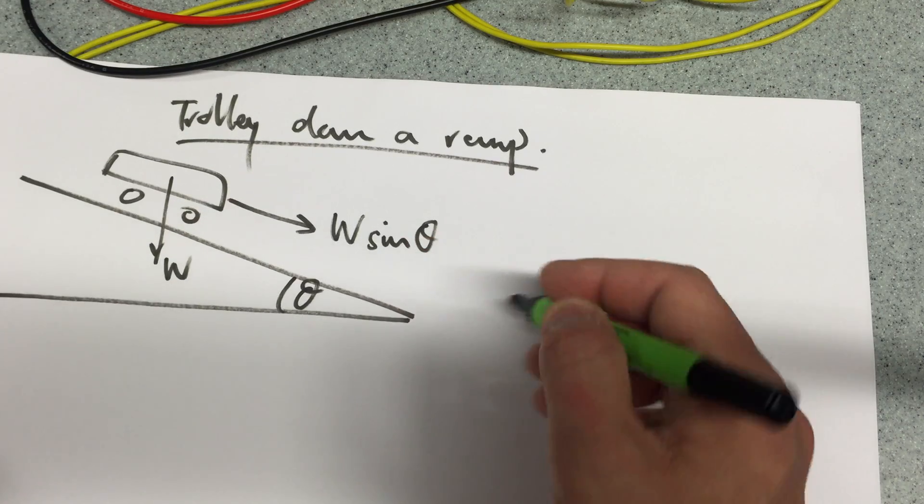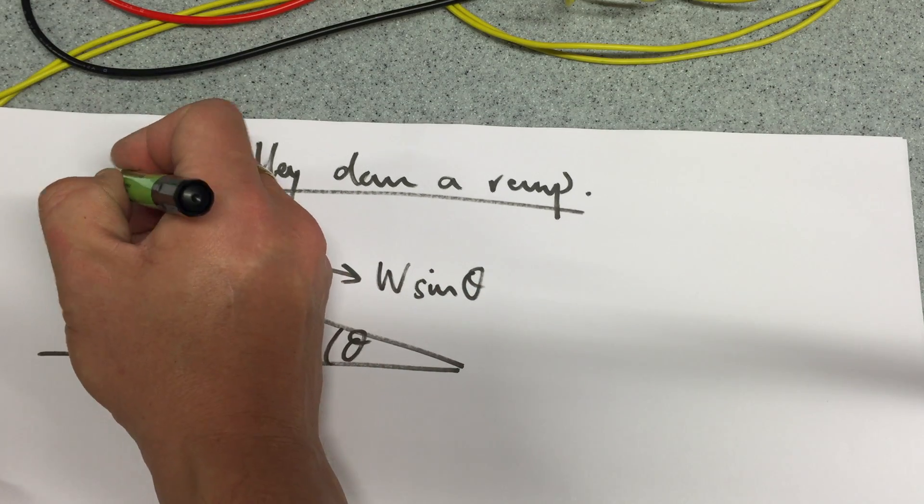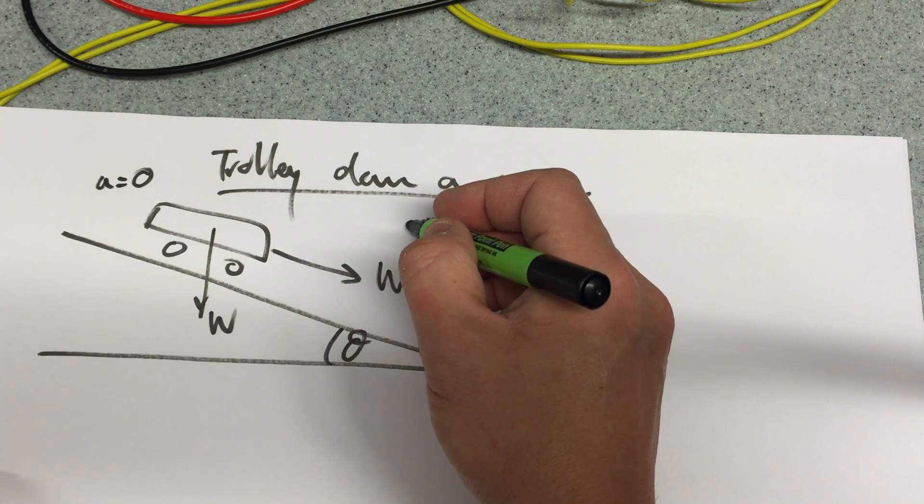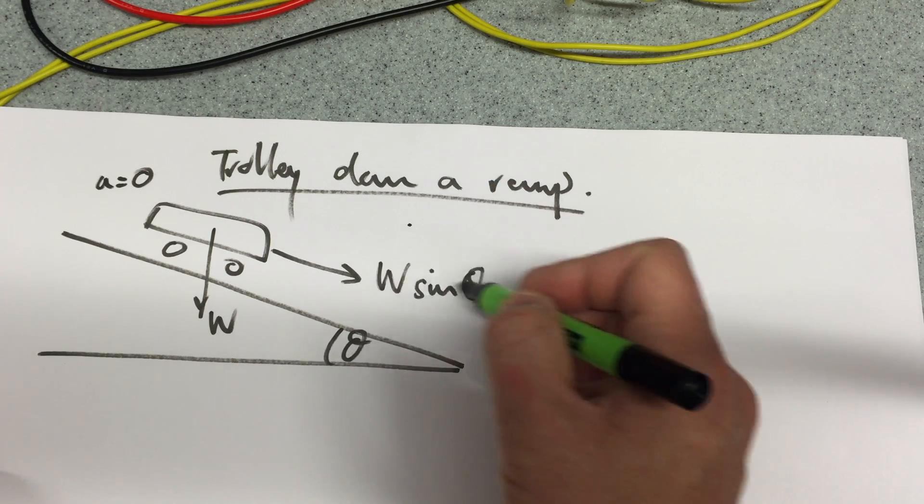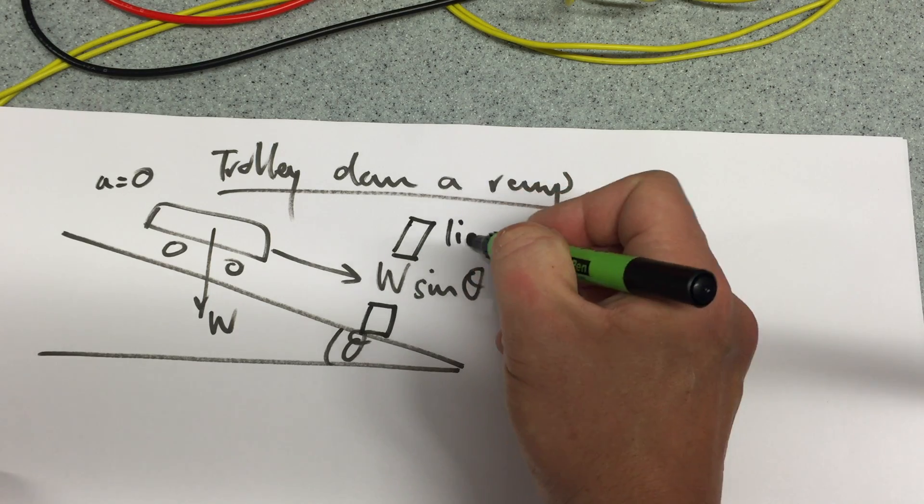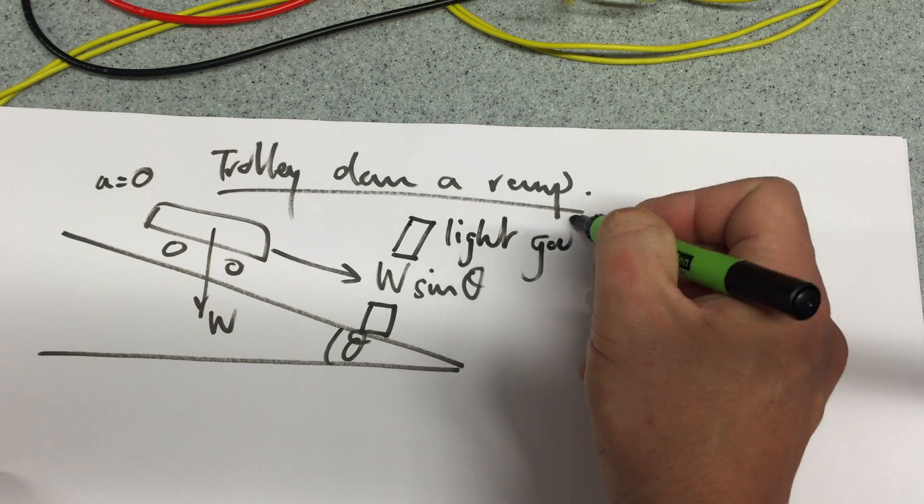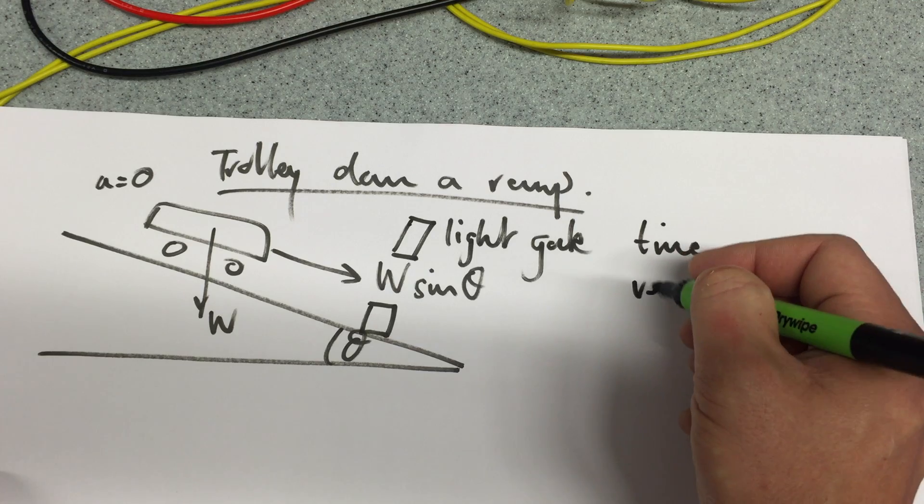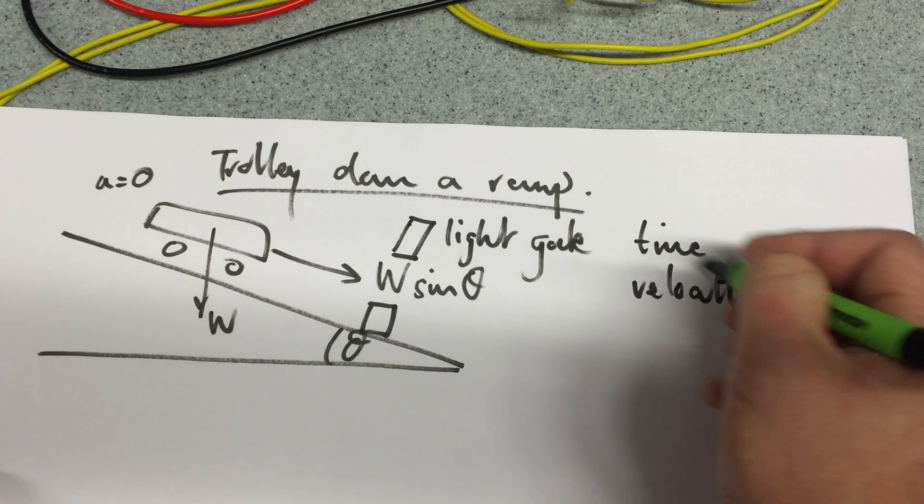Now how am I going to work out what the acceleration is? Well initially I'm going to release the trolley from rest and then I'm going to use at the end here a light gate to work out either the time or the velocity and I've done both for it.